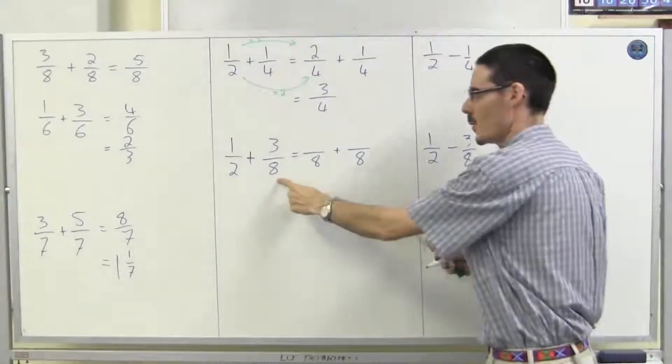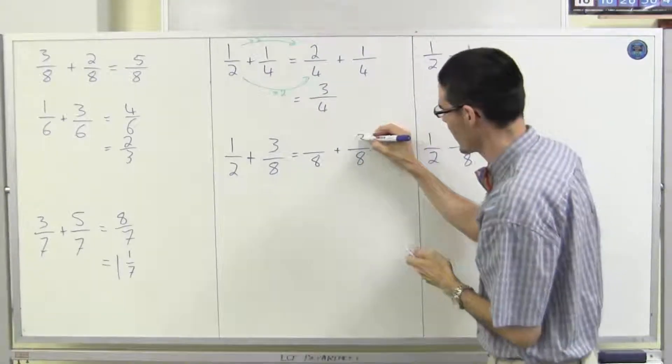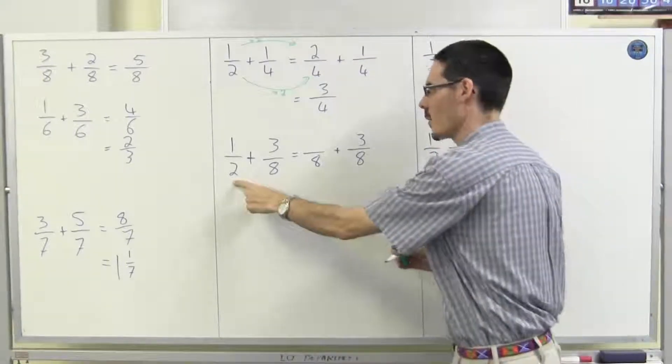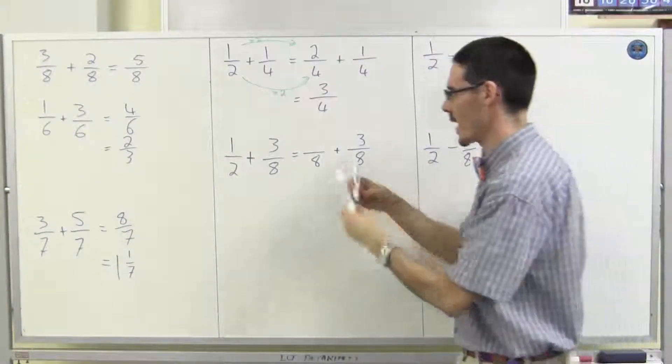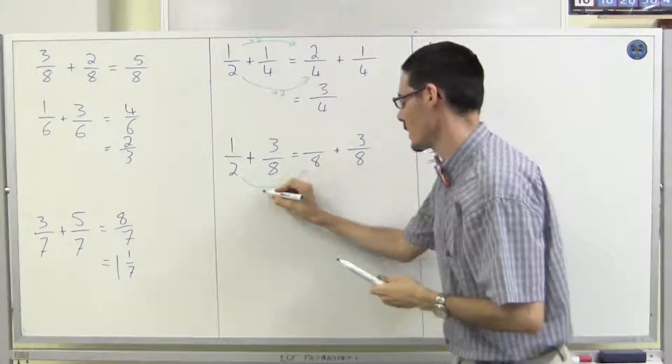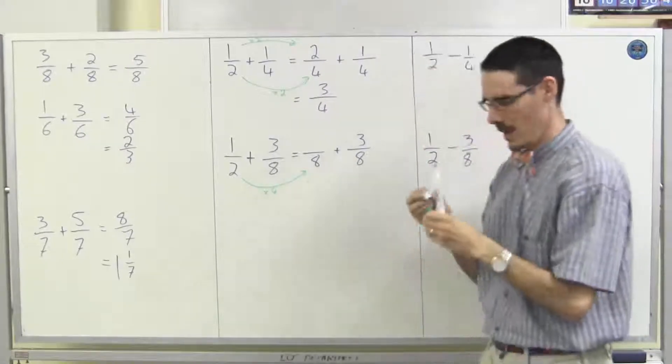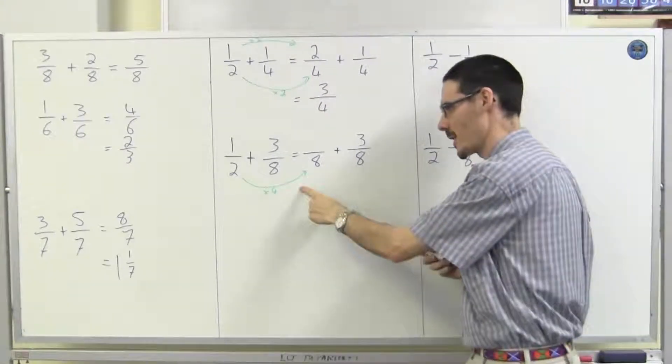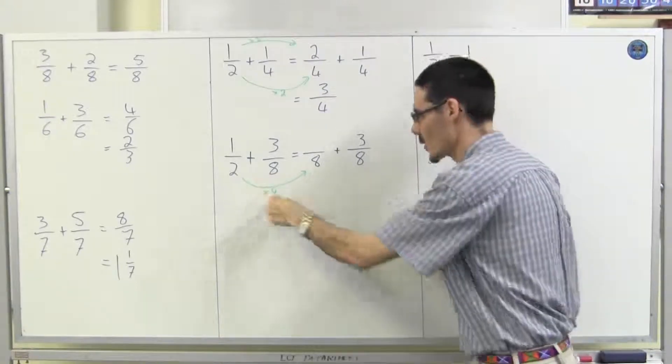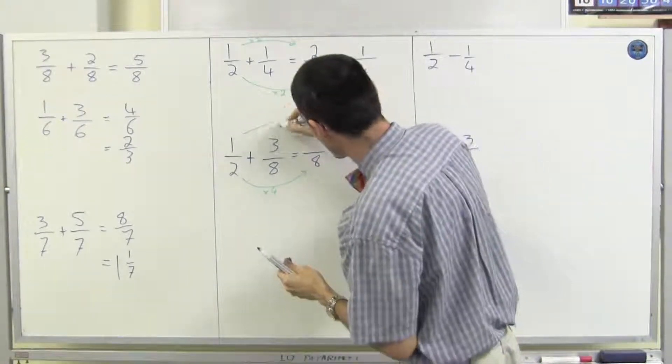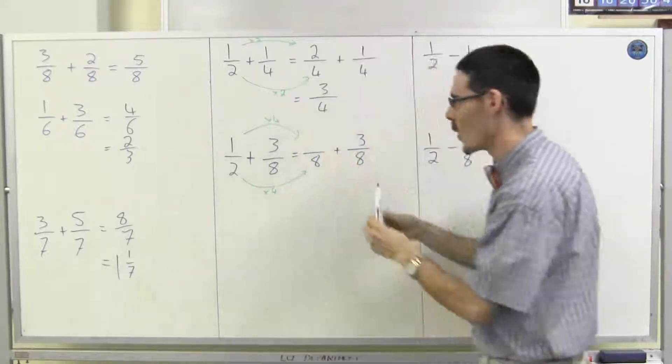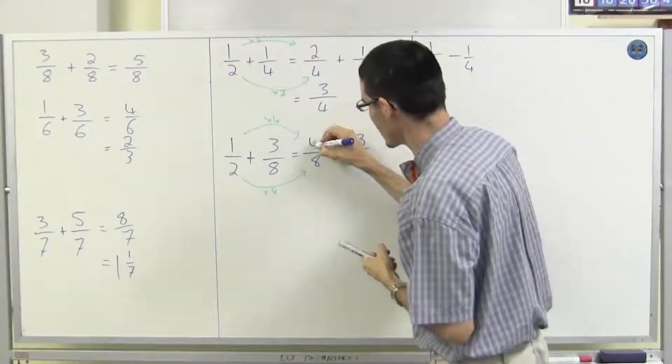Like last time, one of them is already an eighth. But this one, what did I need a two to turn it into eight? I had to multiply by four. Now, you always have to multiply, you can't add. Multiply by four, so do the same to the top. One times four makes four.